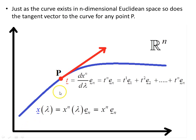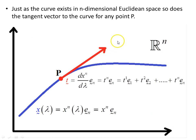Just as the curve exists in n-dimensional Euclidean space, so does the tangent vector to the curve at any point p. For example, it could be two-dimensional space — just x and y — and the tangent vector also exists in that n-dimensional space. So both the original curve and the vector both live in n-dimensional Euclidean space, meaning the tangent space is n-dimensional Euclidean space.